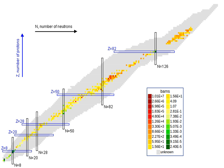The R process happens inside stars if the neutron flux density is so high that the atomic nucleus has no time to decay via beta emission in between neutron captures. The mass number therefore rises by a large amount while the atomic number stays the same.